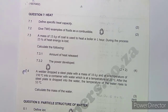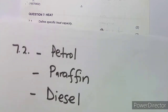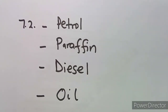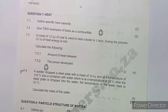On 7.2, give two examples of fluids that are combustible. The fluids we are talking about include petrol, paraffin, diesel, and oil. You can choose any of these to answer your question. Remember, you have information related to what you are doing and the answers they expect you to give.